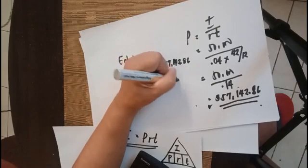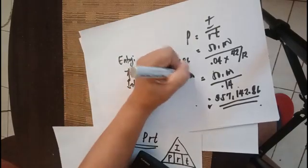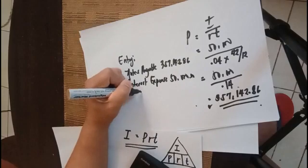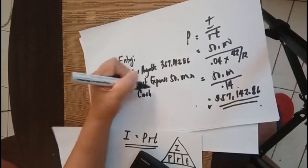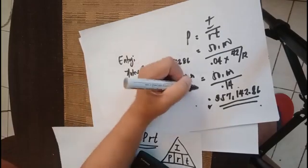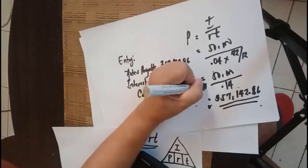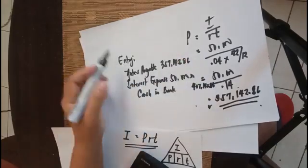And then credit cash in bank which is $407,142.86. So that's the entry.